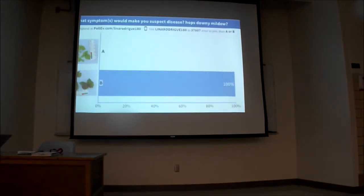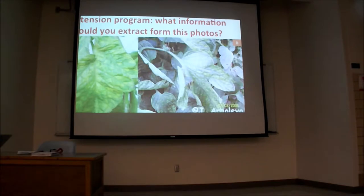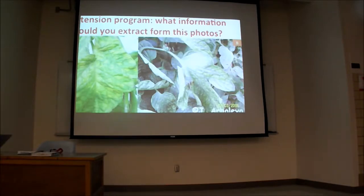Respond in a traditional way — you can write on a piece of paper or just shout out. So in our presentation we're going to give you the answer towards the end. I do a lot of this in the extension presentations I do for growers. Yesterday at the high tunnel for commercial vegetable production program in Raymond Gardner, I asked this question to about 80 growers: which one — A or B — is the disease? The big question behind it is: what information do you extract from these photos?